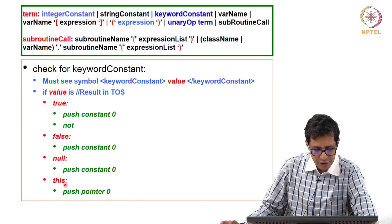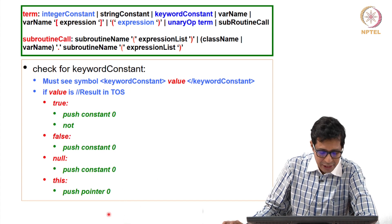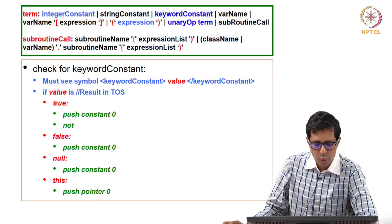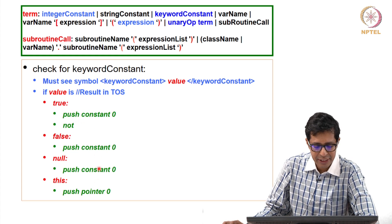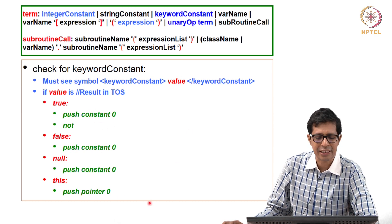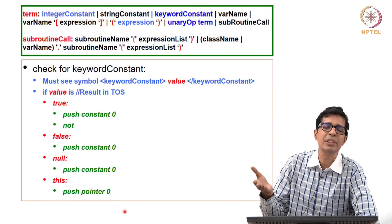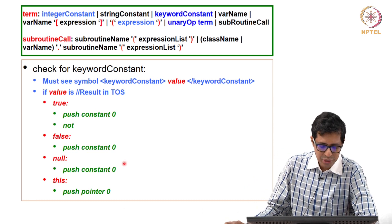If it is null, again you push constant 0. If it is this, the starting address of this will be in pointer 0. There are 4 values for keyword constant, and for each we dump the corresponding code. At the end, the result of this keyword constant will be on the top of the stack. So compile term generates code that leaves the result on top of stack.